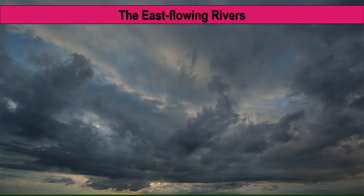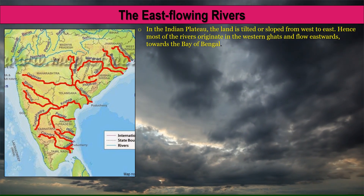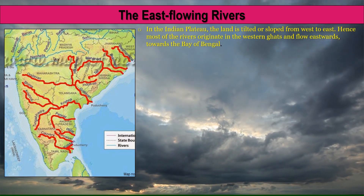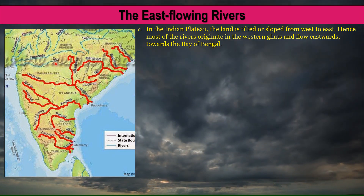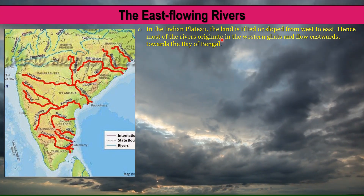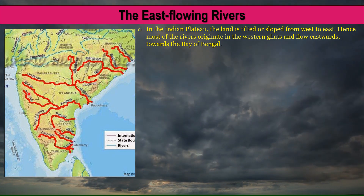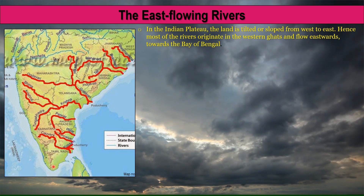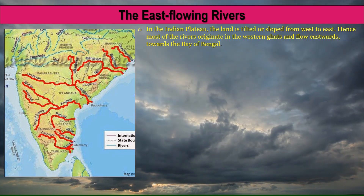We will now move on to the East Flowing Rivers. In the Indian Plateau, the land is tilted or sloped from west to east; hence most rivers originate in the Western Ghats. Rivers such as Godavari, Bhima and Krishna all originate from the Western Ghats and flow eastwards towards the Bay of Bengal.